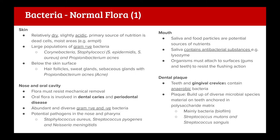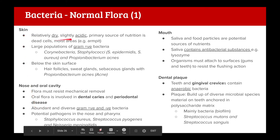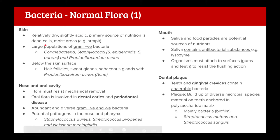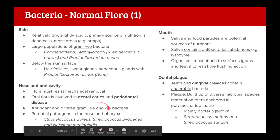Starting with skin bacteria: bacteria are found in just about every part of the body. The skin is relatively dry and slightly acidic, with dead skin cells as a source of nutrition. Moist areas like the armpit or between toes harbor different kinds of bacteria. Skin bacteria are mostly gram positives. Below the skin surface, in glands, you can find bacteria that cause acne.